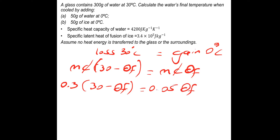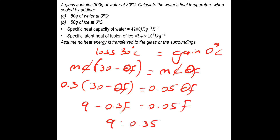All we need to do is multiply out the left-hand side bracket and rearrange to find θf. So 0.3 times 30 is 9, minus 0.3θf, equals 0.05θf. Moving 0.3θf to the right-hand side leaves 9 equals 0.35 times θf. So the final temperature is 9 divided by 0.35, giving a final temperature of 25.7 degrees Celsius.